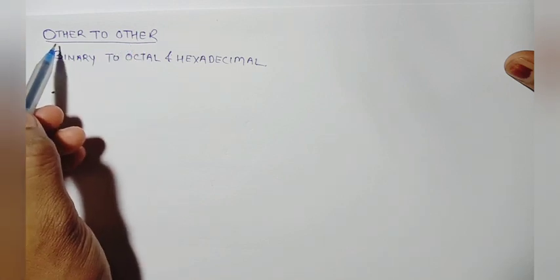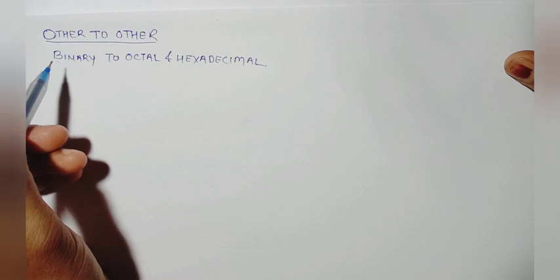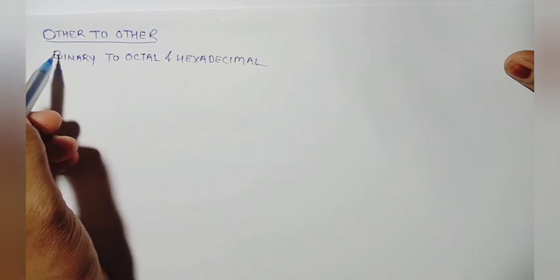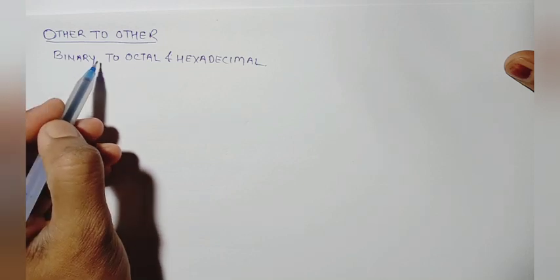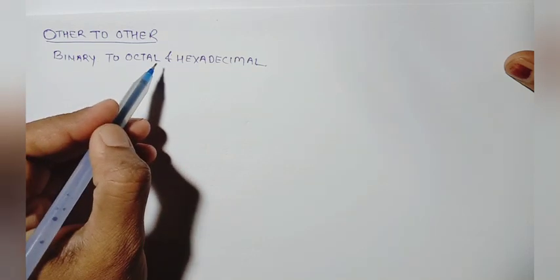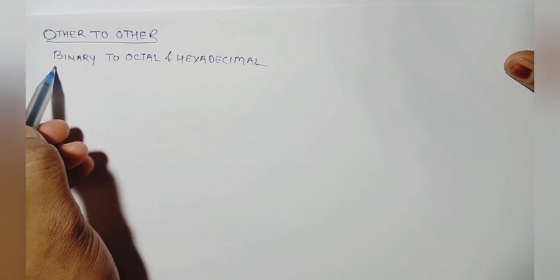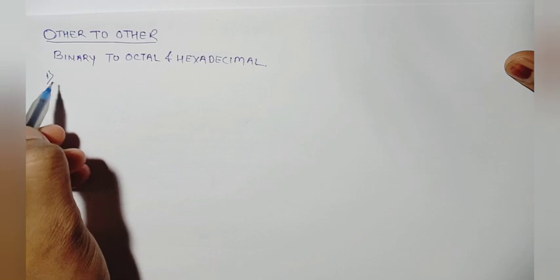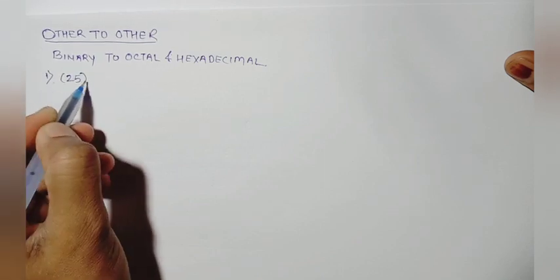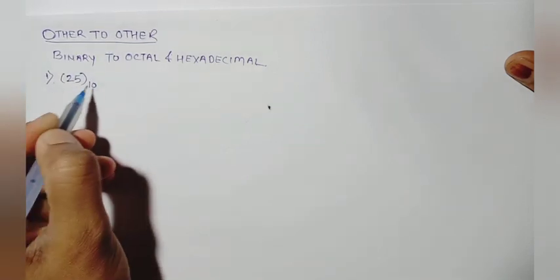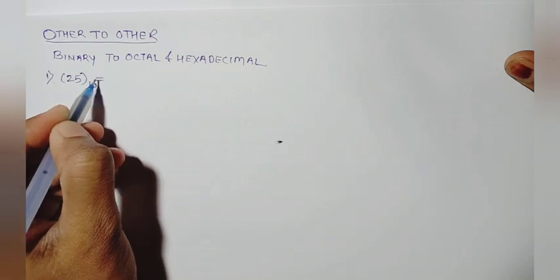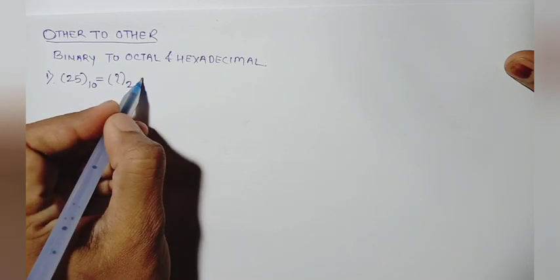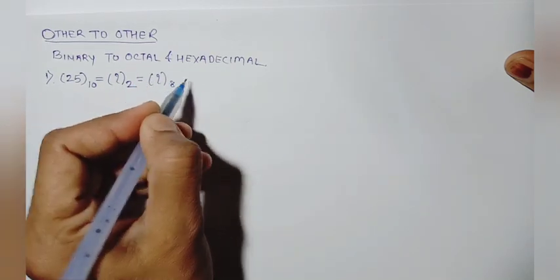Before talking about octal and hexadecimal system to binary number system, how do we transfer the binary number to octal and binary number to hexadecimal — this concept is clear to us. We will take an example. Suppose example number 1: 25 is given as decimal, and this decimal number we have to first convert to binary.